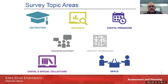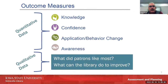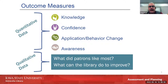Many of you are probably familiar with Project Outcome — it has a set of simple-to-use survey templates across seven different domains. In our case, we were focusing on the space domain related to study rooms in the Iowa State University Library. Project Outcome surveys all have the same basic components: they ask questions related to outcomes around students' knowledge, confidence, behavior change, and awareness of library resources. They also have a couple of open-ended questions at the end, asking what students liked most about a particular service and what the library can do to improve.